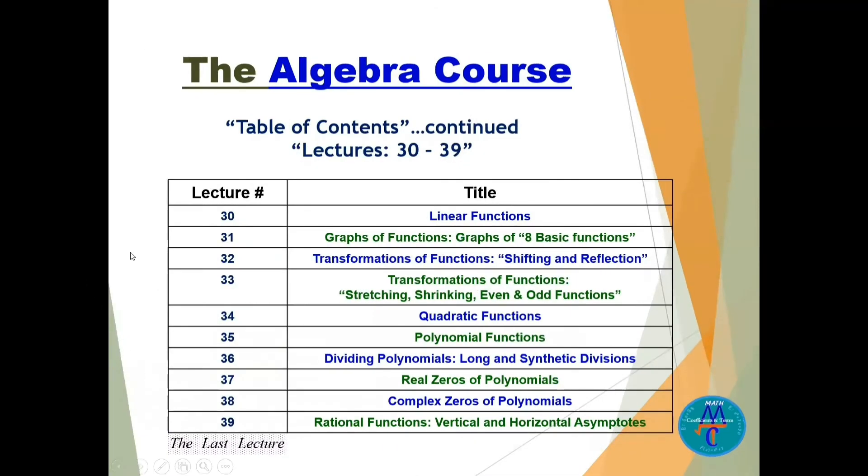Now this slide is lectures 30 to 39. If you need quadratic functions, this is lecture number 34, where the graph is a parabola—find the vertex, maximum, minimum, and then real zeros is lecture 37. Complex zeros of polynomials, lecture number 38. And the last lecture is number 39, where you need to find rational functions, vertical and horizontal asymptotes.